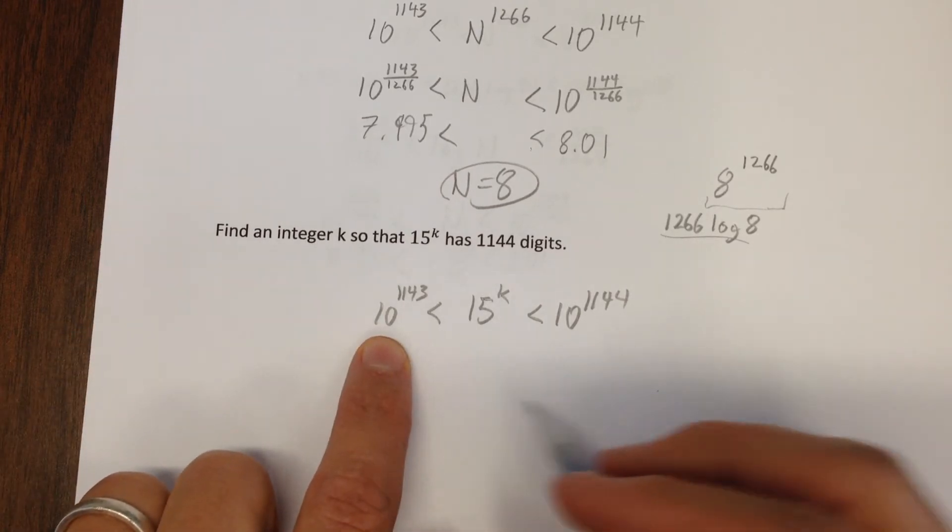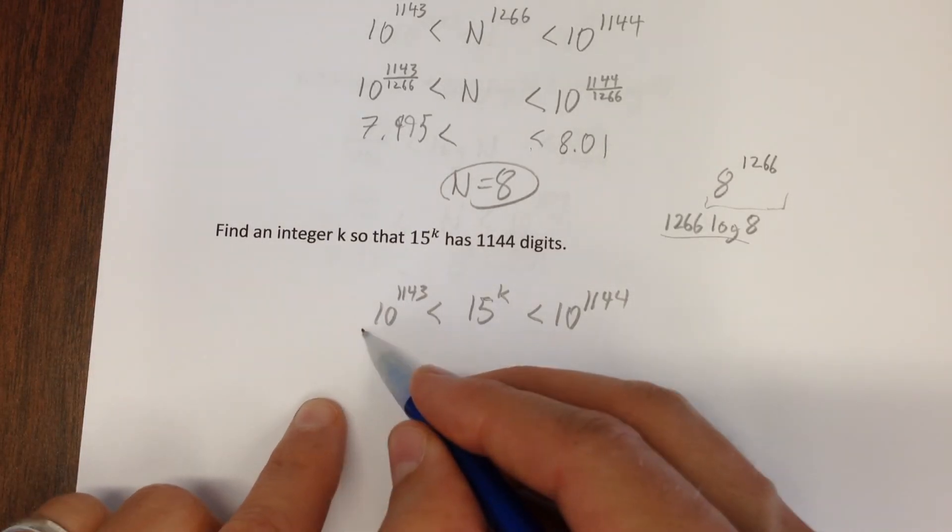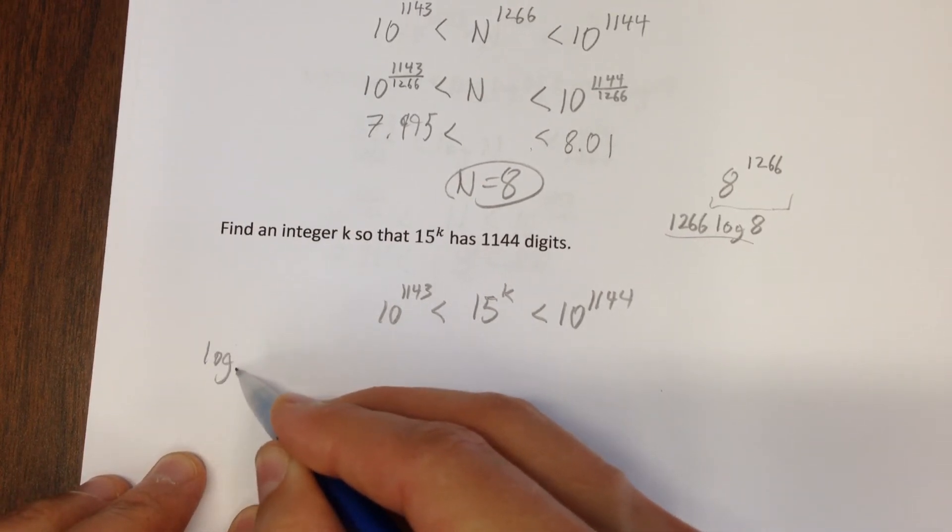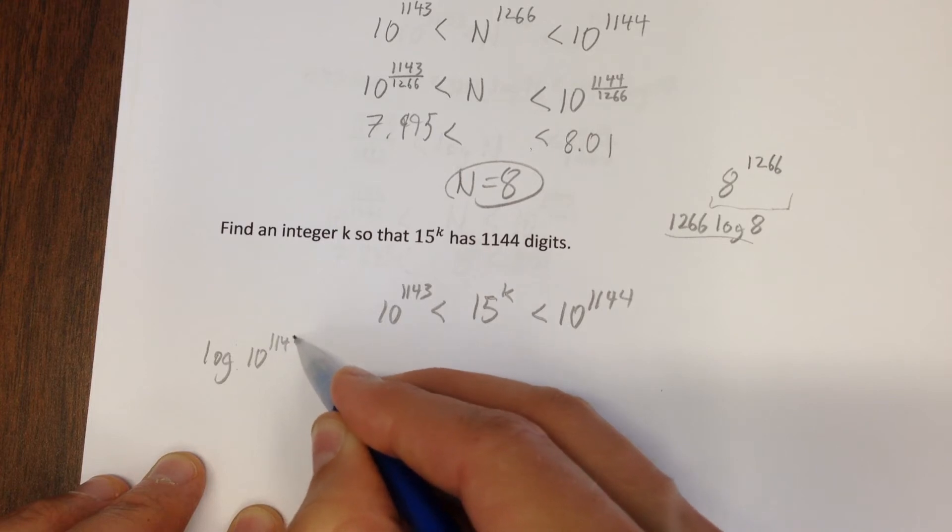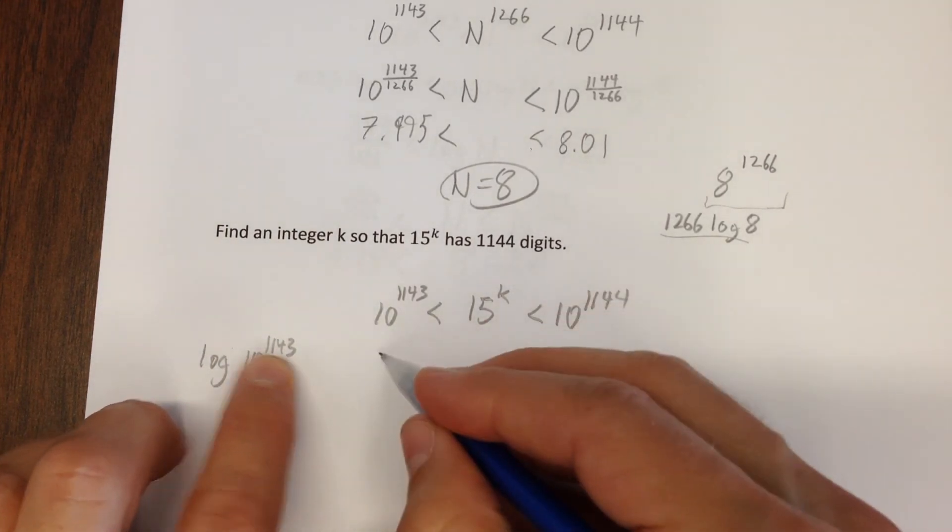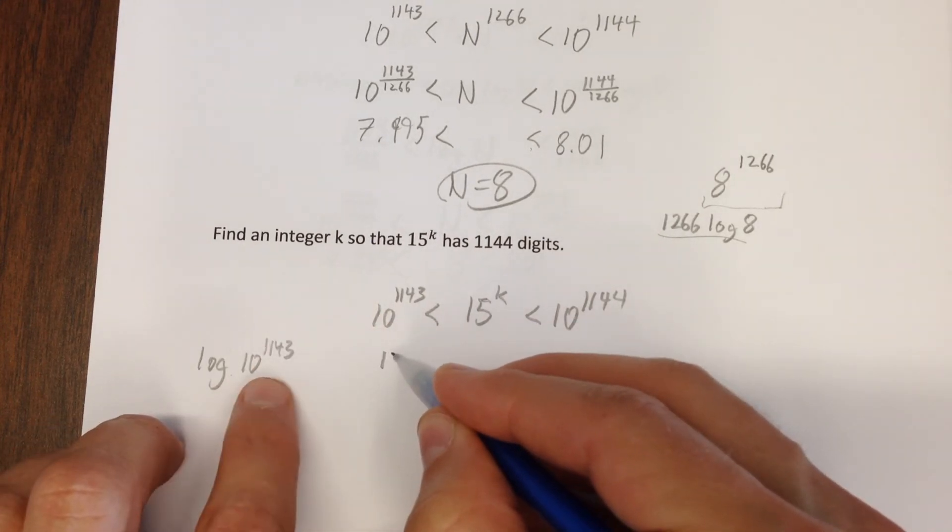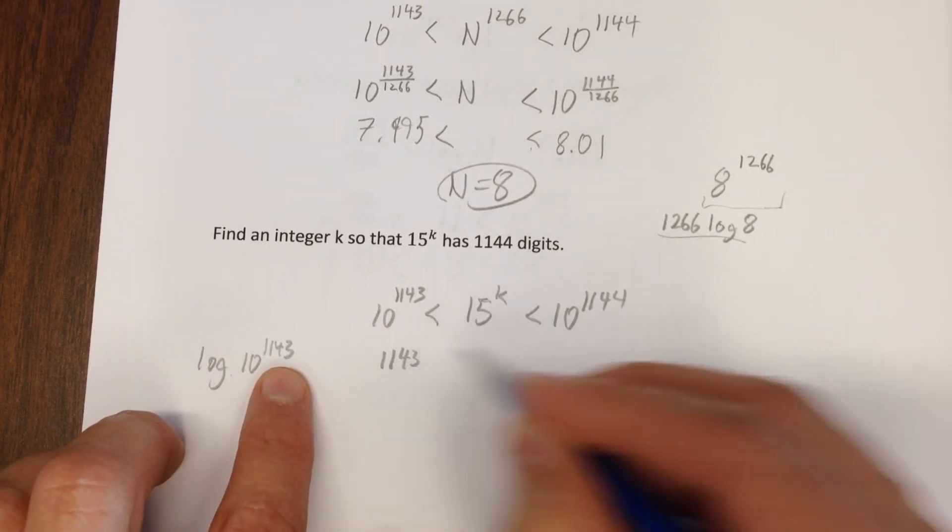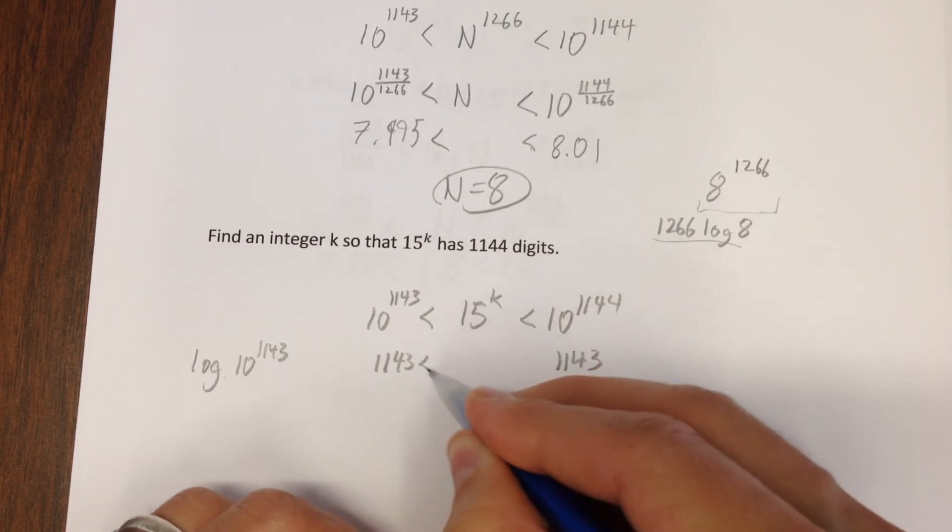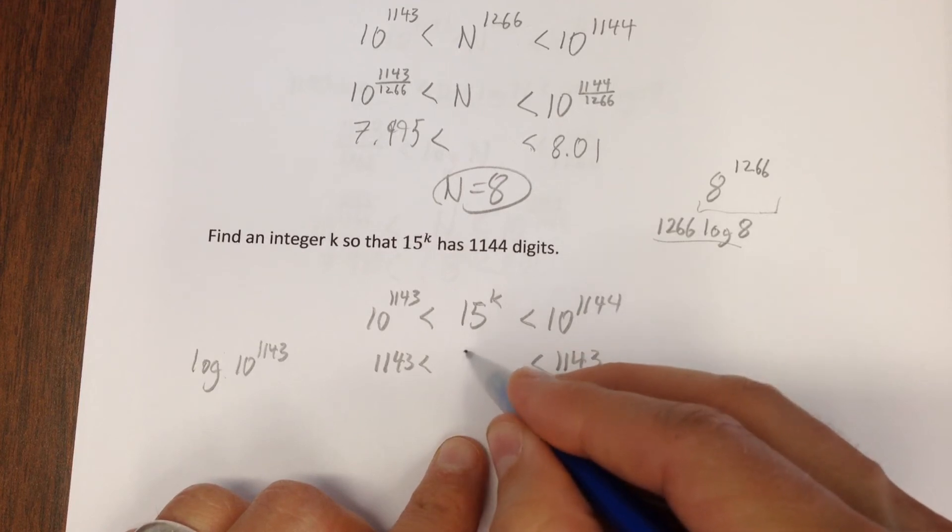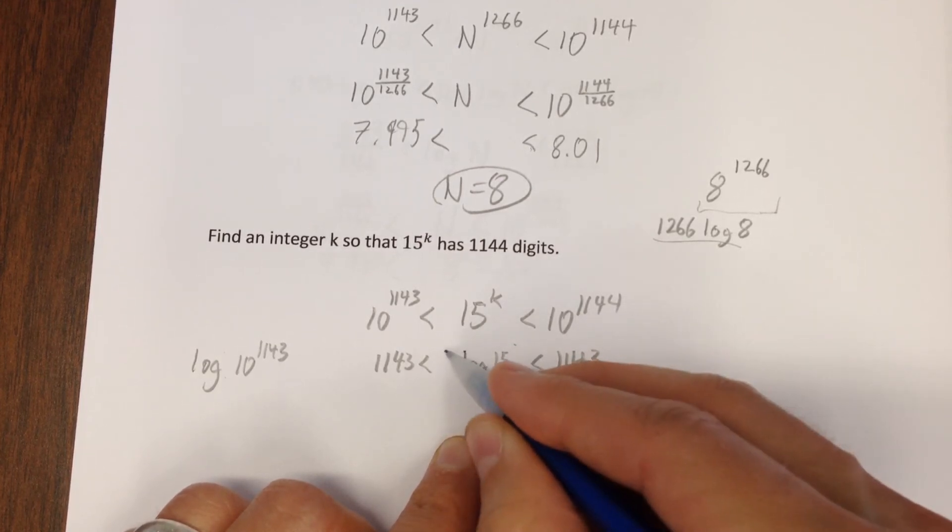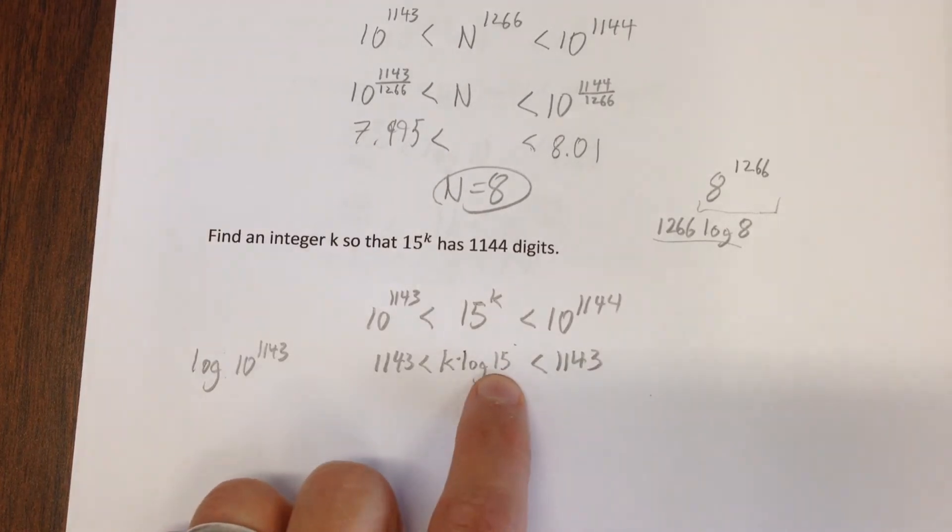Now the nice thing is if you took log, let me just write to the side here, log base 10 of 10 to the 1143, can you see this says 10 to what power is 10 to the 1143? Log of this, log base 10 of this, is just 1143. Log base 10 of this is 1143. Log base 10 of this, you could write it as log of 15 to the k, or I'll just write it as k times log 15.